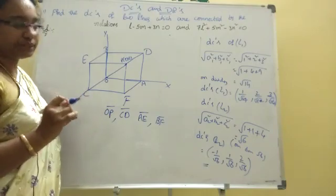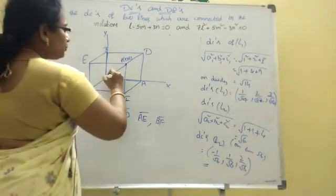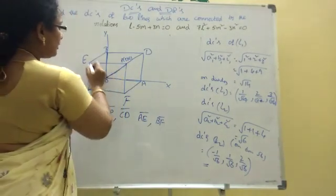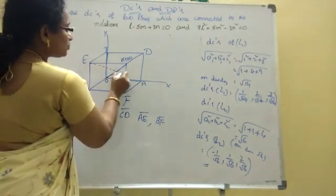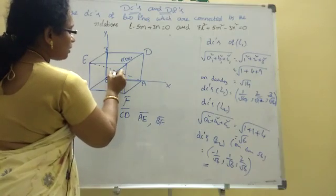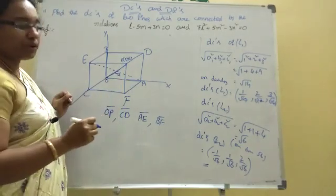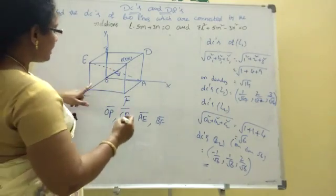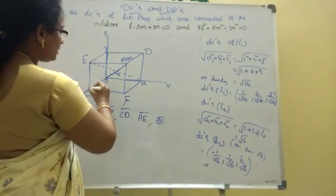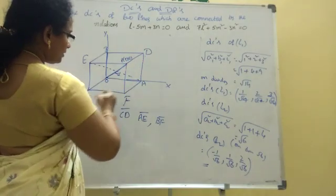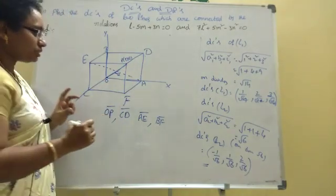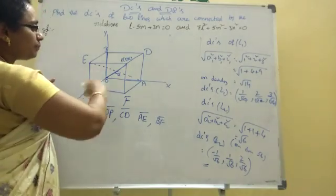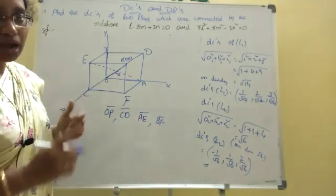This is the angle. The angle involves OP — this is OP. Then A, E, G. This is the angle — this is alpha. This is alpha, this is beta. Suppose it is CD: C to D. This is OP with direction ratios L, M, N.